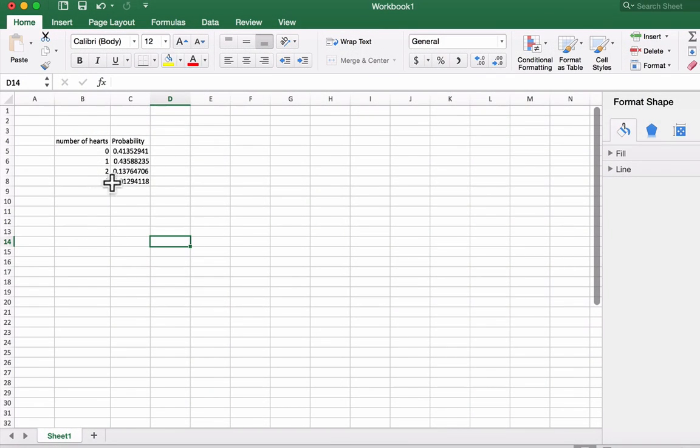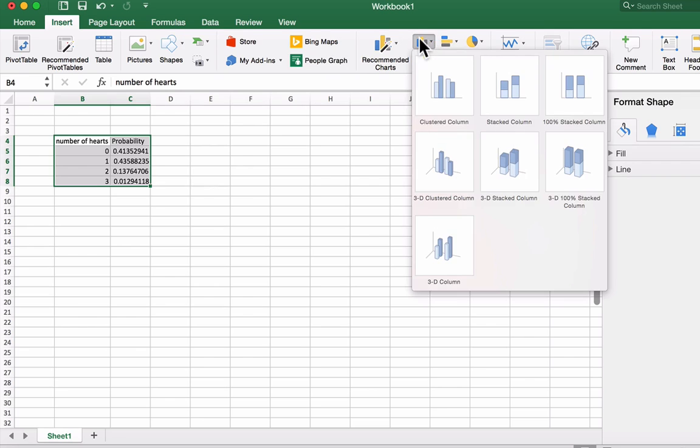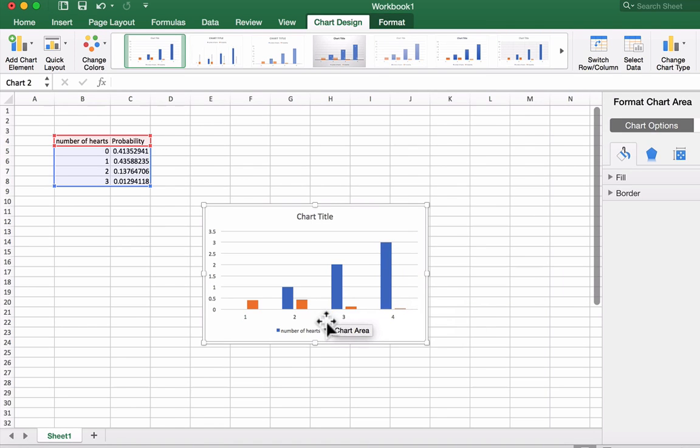So now, what I have here is an Excel file in which I've got the results from our probability distribution. When I put this into a chart, we're going to have to adjust the axes.